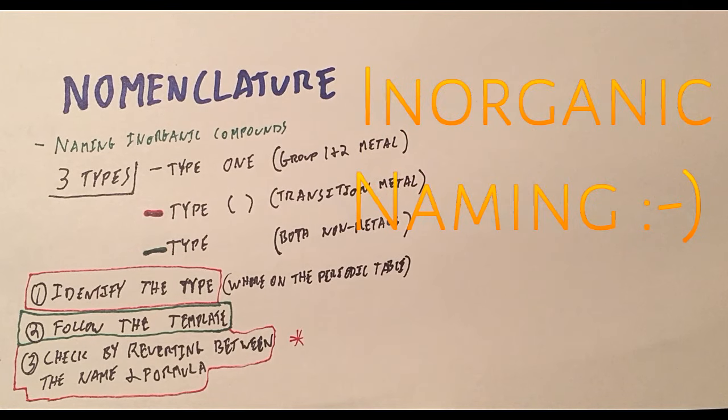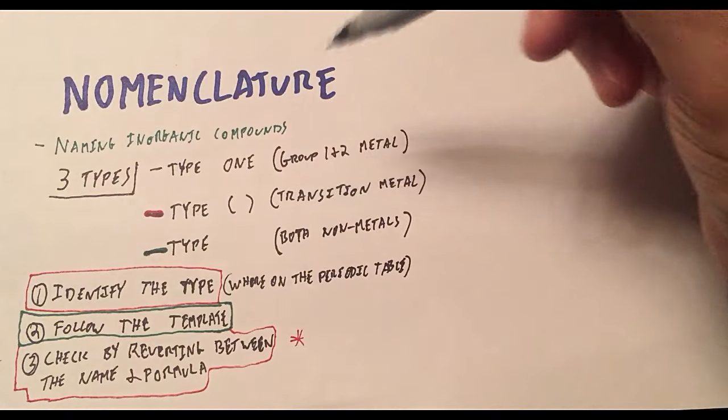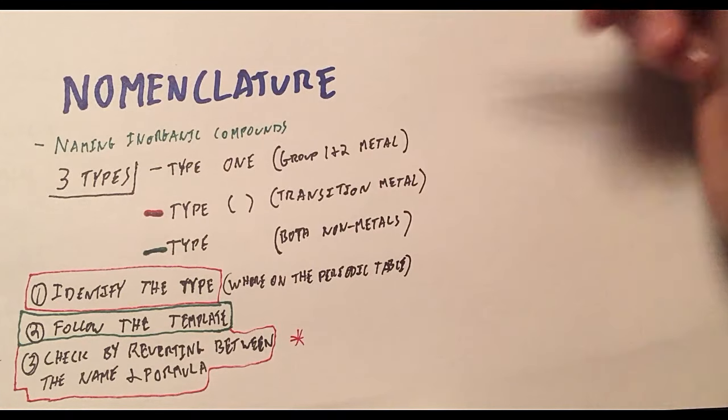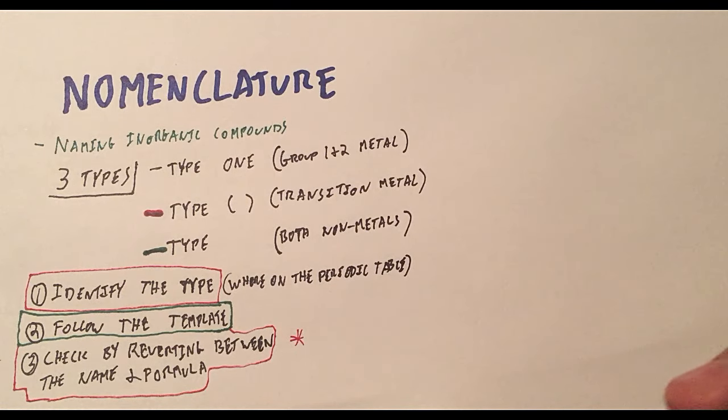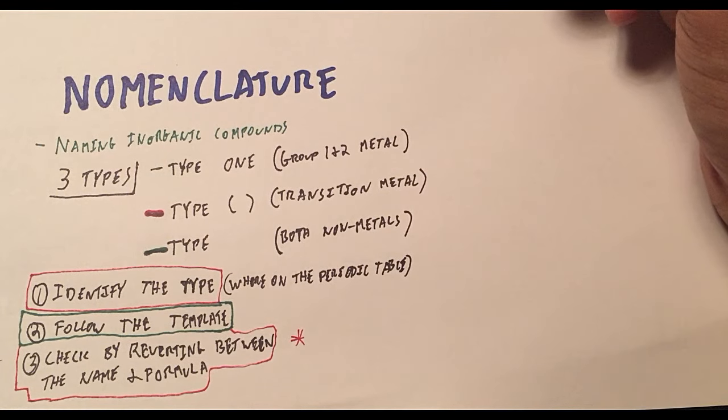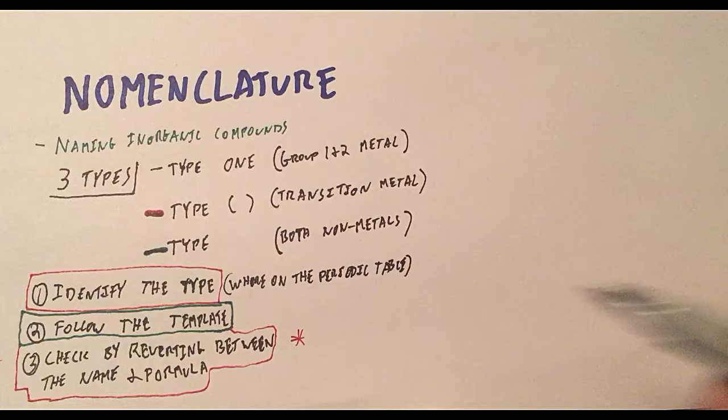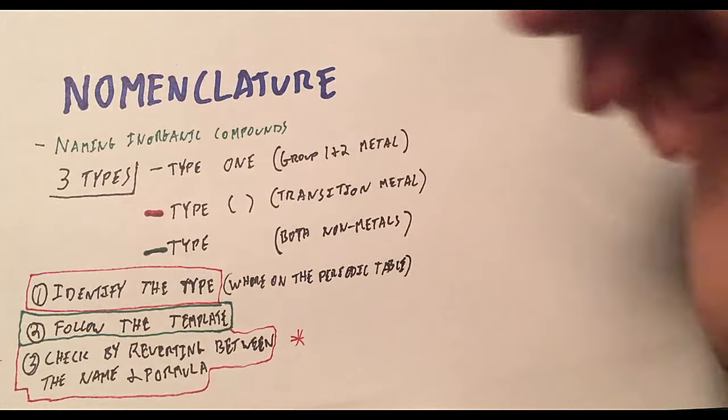All right, so today we're going to talk about nomenclature and more specifically the naming of inorganic compounds. This is a concept that tends to give students a lot of problems. However, if you follow the method I'm about to show you, we can probably turn something that's difficult for you into guaranteed points on the test because really it's just about following a procedure and going about it slowly. So to start off we're just going to jump right in.